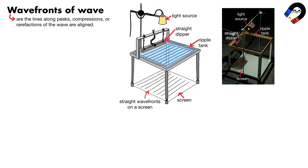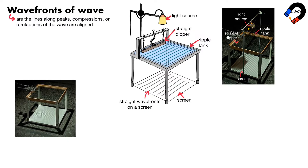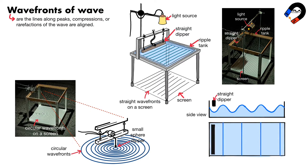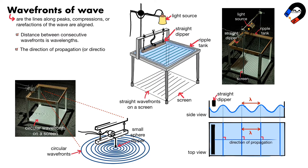A stroboscope or video camera is used to create slow motion of the wave fronts on the screen. A small sphere dipper can be used to create circular wave fronts in a ripple tank. The wave fronts are along crests or troughs of the wave, so the distance between consecutive wave fronts is one wavelength. The direction of propagation or direction of energy transfer is always perpendicular to the wave fronts.